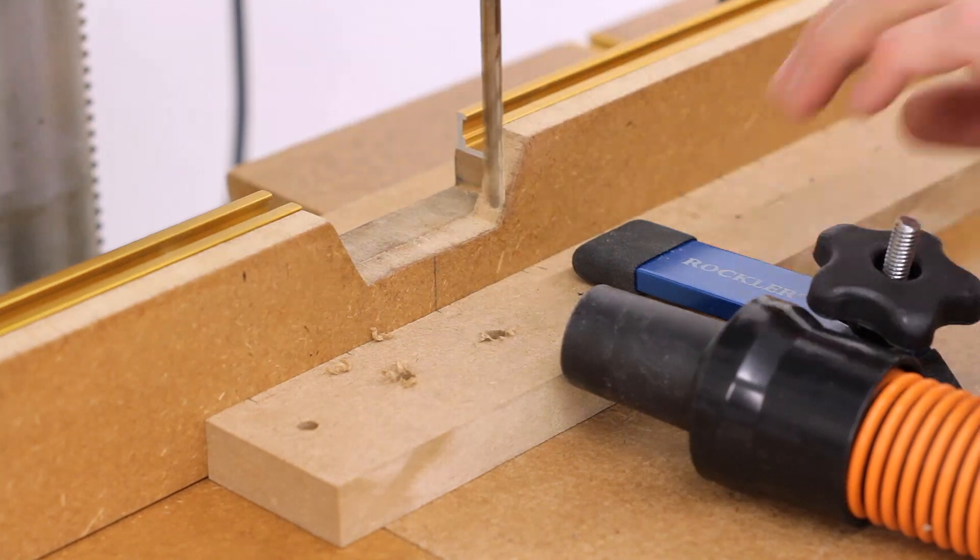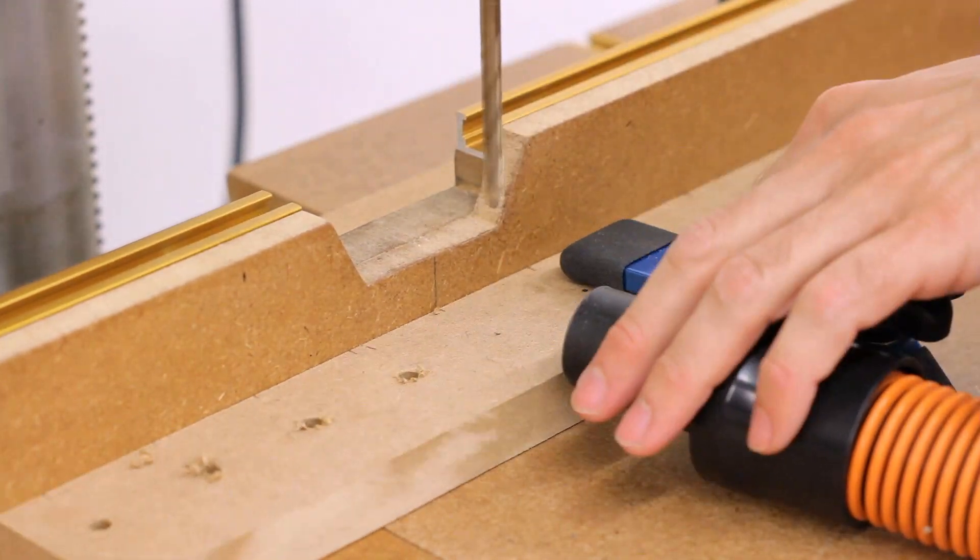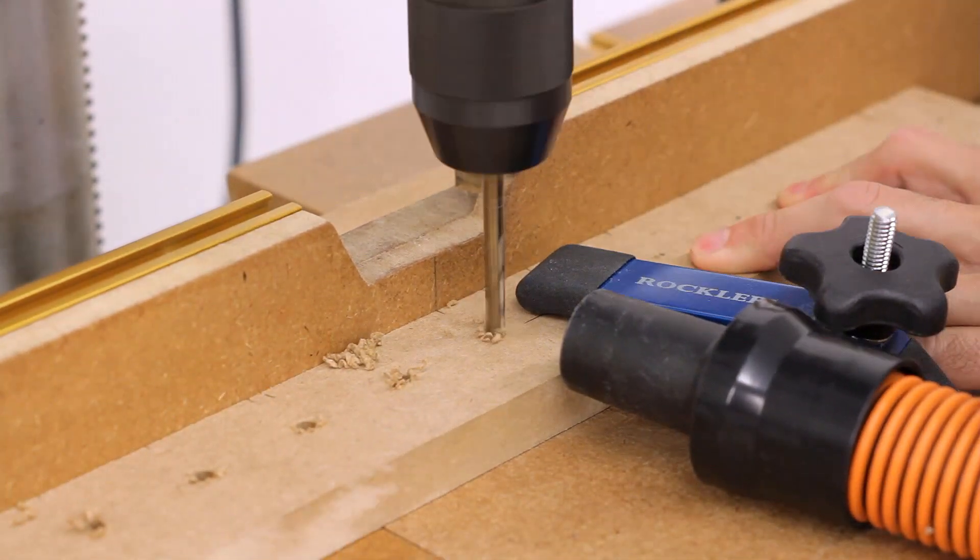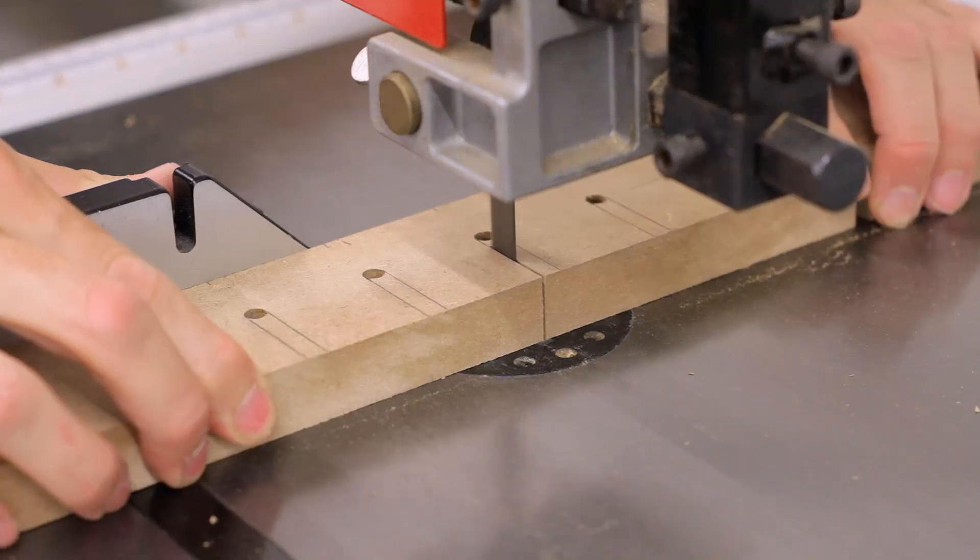Next I drilled holes in the top using a bit that was just a little bit bigger than the width of the bar on the largest clamp, and after tracing the lines for the slots I then cut them out on the bandsaw.